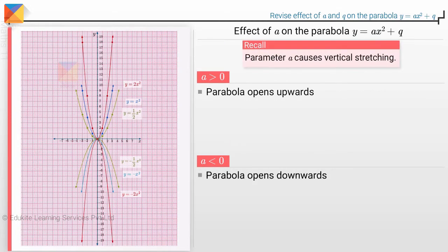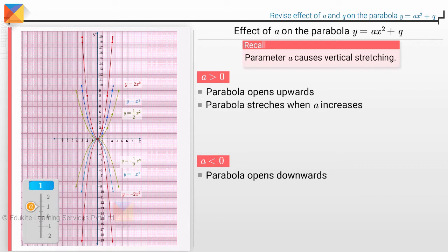Recall what happens when we vary the value of A. It causes vertical stretching. As A is increased from 1 to 2, the graph is stretched vertically. When A is decreased, as it does here from 1 to 1/2, the graph becomes wider.